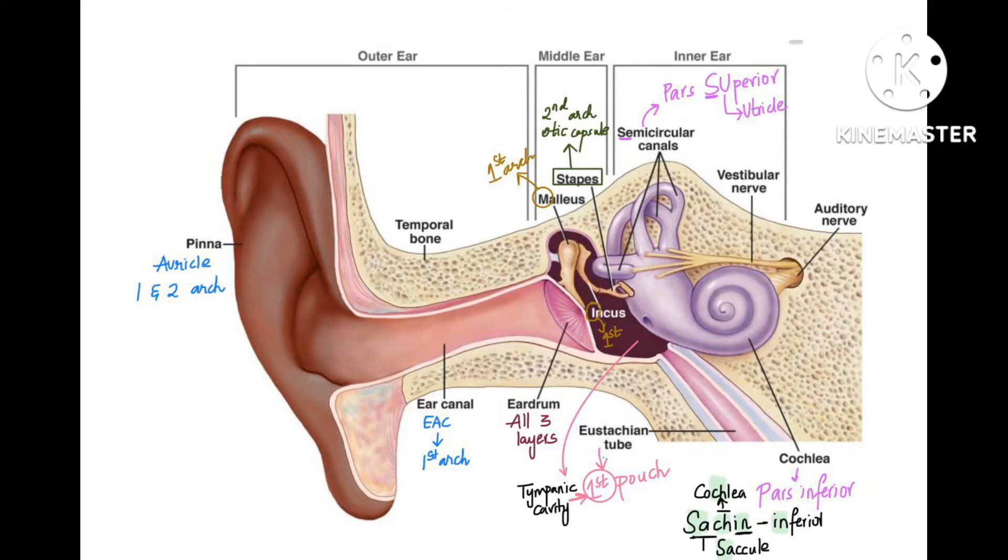Outside regions are from the arches, and when you go towards the inner side it becomes pouches. Remember this point: first and second arch is pinna, and first arch is external auditory canal.